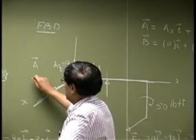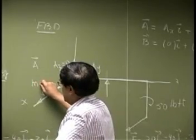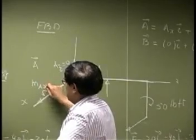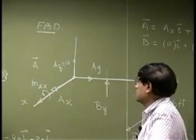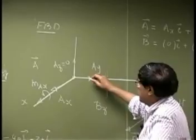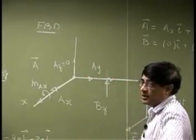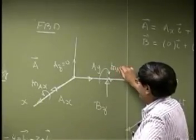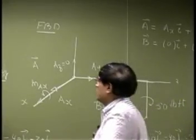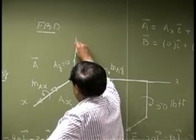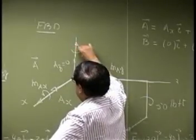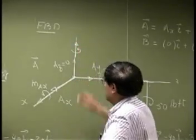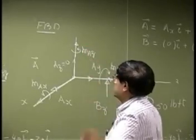There will be a couple and you call this, let's say, as MA in the direction of X. Same thing, it cannot rotate in the Y direction, so you can have a couple. We call this as MA and Y. And same thing about the Z direction. This will be a couple and that's going to be again MA, Z.